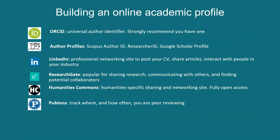If we look at something like ResearchGate, you need to be careful of intellectual property. You might find your publisher owns the rights to your work, or at least for a time it might be embargoed. So you need to be careful what you're sharing about your own work. Publons is good if you're a peer reviewer and you want credit for that. And if you're from the humanities, you might want to look into Humanities Commons.